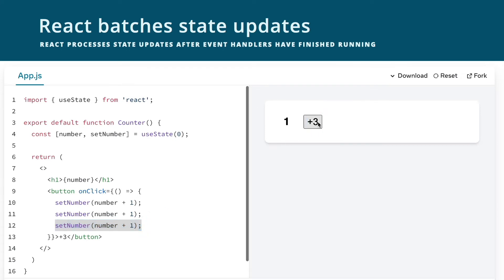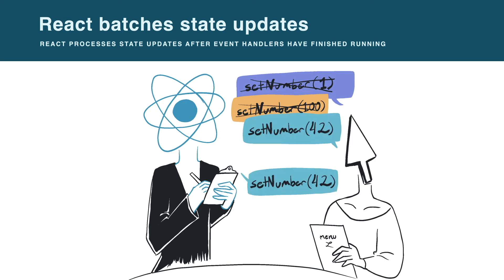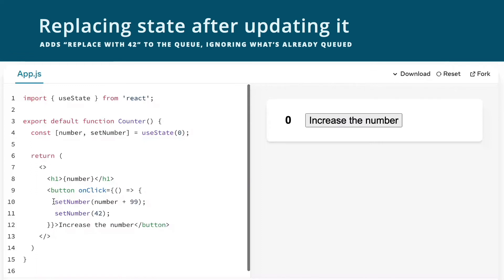Why? Did you know that React batches state updates? It basically means that React will wait for everything in the event handler to finish before it renders the component with the updated state. It adds the state update to the queue and finishes what else is in the event handler. You can think of it as if React were a waiter taking an order — you can change your order multiple times before they go to the kitchen. You can keep changing your mind on what dessert you would like, but you're probably only going to get the last one you ordered. React will keep adding setNumber to the queue and only render when the event handlers have finished running. The last setNumber will be the one that gets rendered — in this example, the number will be 42, the last one in the queue.